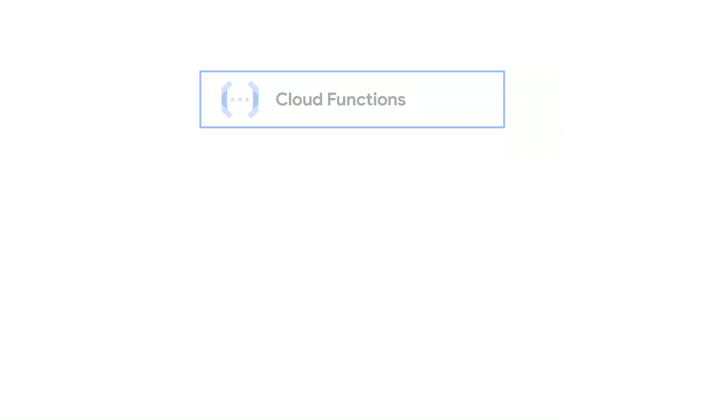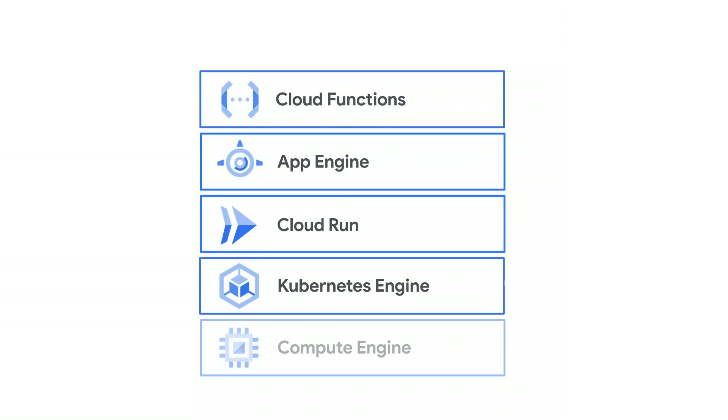With serverless it's more event-driven - responding to an HTTP request or a message broker - and you have the potential to scale down to zero. Let's talk about these abstraction layers in order. You have functions as a service, and our offering there is Cloud Functions. From a developer's perspective, you write this small piece of code - a function - and push it up to Google Cloud. We do all the work of running it. It responds to an event, maybe from HTTP or a message system, does a little bit of work, and then returns.